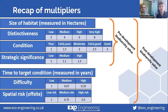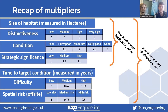To give a recap about the multipliers, in terms of our pre-development biodiversity value, we take into account the size of our habitat, which is measured in hectares. We also consider distinctiveness, condition, and strategic significance. Habitat distinctiveness is a measure of how significant a habitat type is for biodiversity in a national context, and this can relate to its rarity or other priorities.